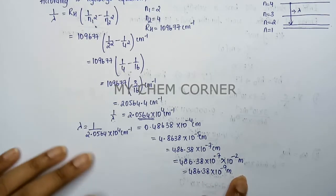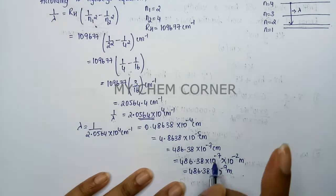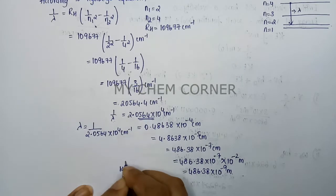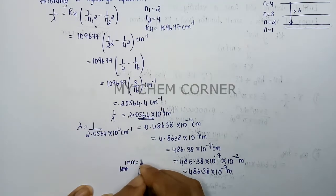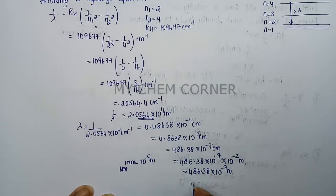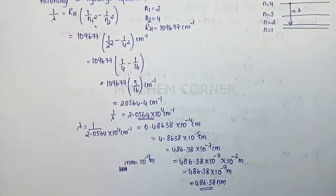When we convert like this, 10⁻⁹ m is equal to 1 nanometer. Because 1 nanometer is equal to 10⁻⁹ m. We have 10⁻⁹ m, that means we have 486.38 nanometers. That is going to be the wavelength for this particular emission.